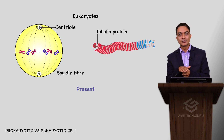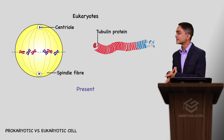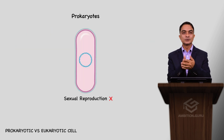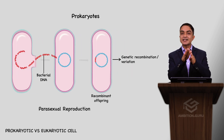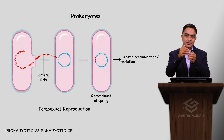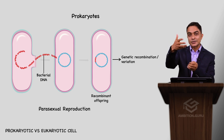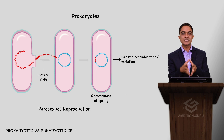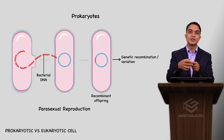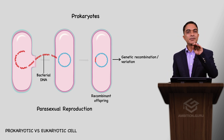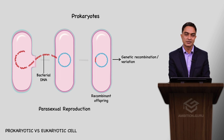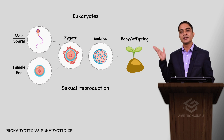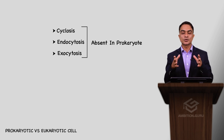Sexual reproduction is absent in prokaryotes, but parasexual reproduction occurs — meaning genetic exchange happens. In bacteria and other prokaryotes, genetic recombination occurs through parasexual reproduction. Sexual reproduction is very common in eukaryotes for genomic variation. Processes like cyclosis, endocytosis, and exocytosis are absent in prokaryotes but present in eukaryotes.